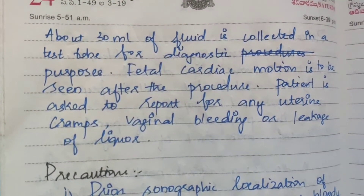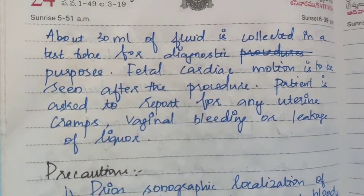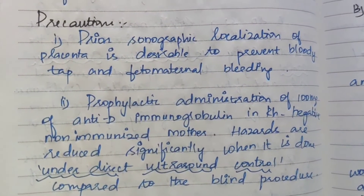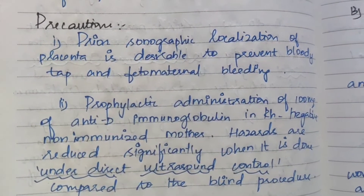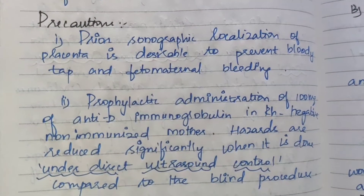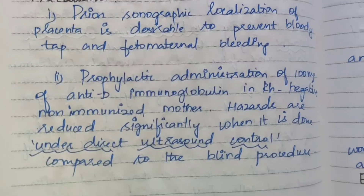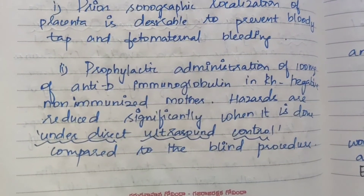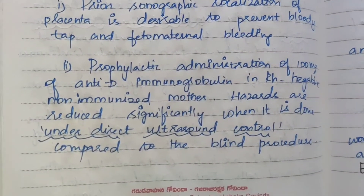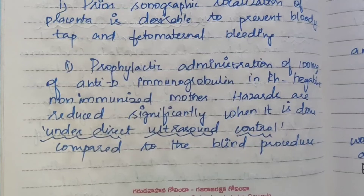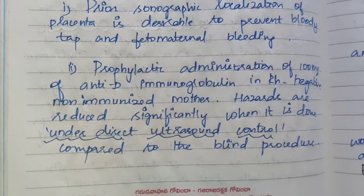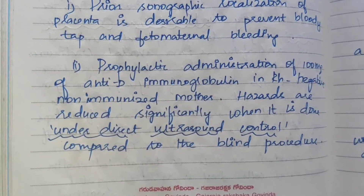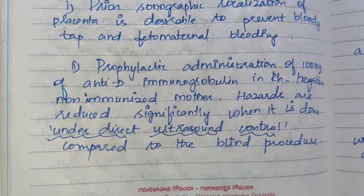Precautions: pre-procedure sonographic localization of the placenta is desirable to prevent bloody tap and fetomaternal bleeding. Prophylactic administration of 100 mcg of anti-D immunoglobulin is given to RH-negative non-immunized mothers. Hazards are reduced significantly when the procedure is done under direct ultrasound control compared to a blind procedure.